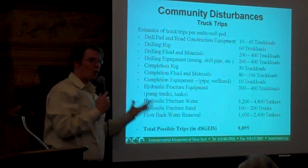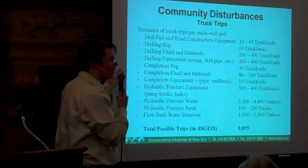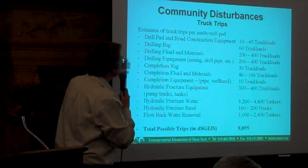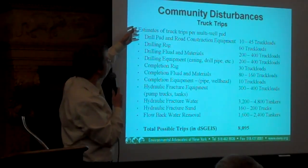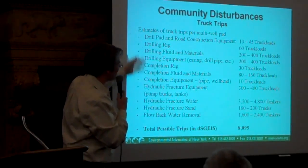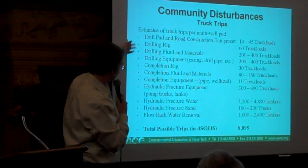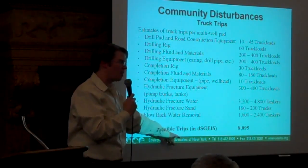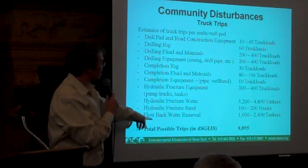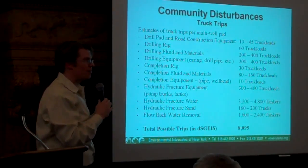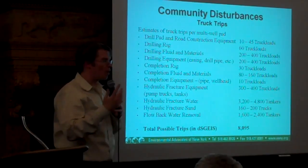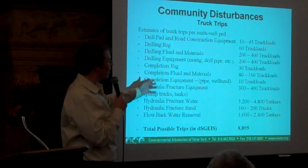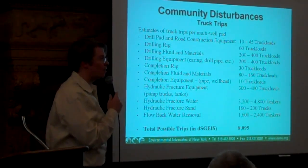Another issue besides the water withdrawal issue, as I mentioned earlier, these are rural communities, small farming communities. This is the disturbance that you're going to have to these communities. This is the number of truckloads that come with this — a total of 8,000 truckloads. These are 16-wheel semis coming into communities that sometimes don't have more than one or two semis coming through in a day. It's just obscene, the amount of truck traffic that's going to come through these areas.